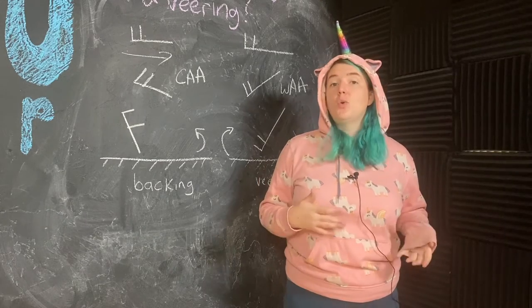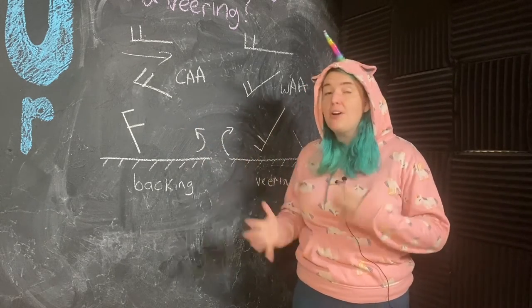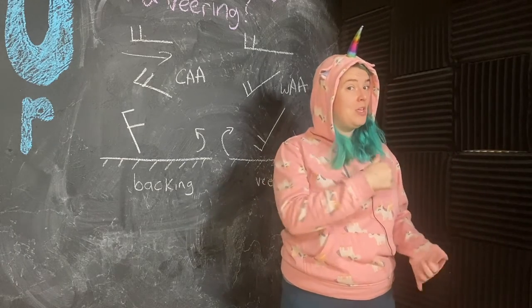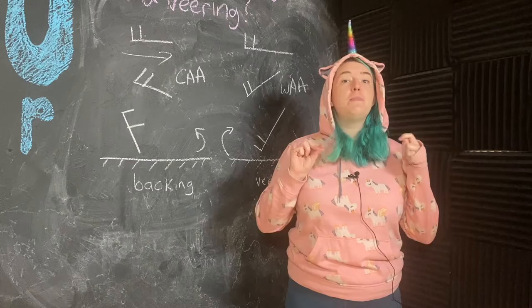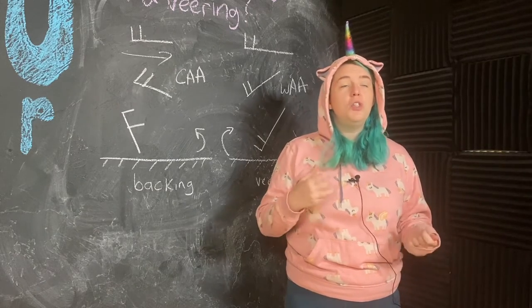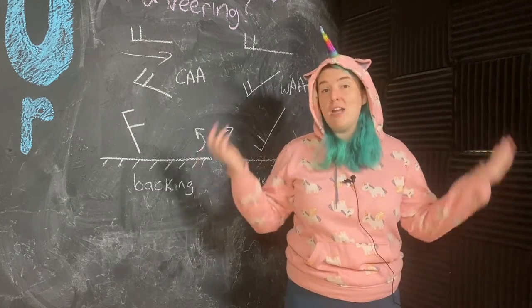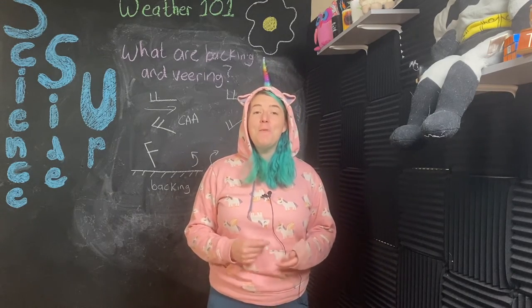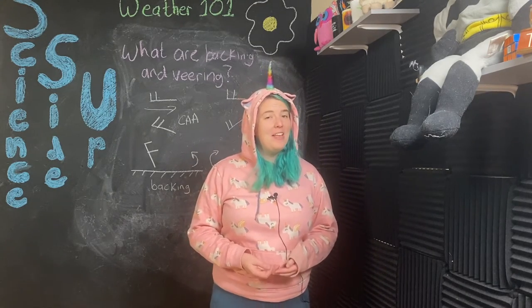In short, being able to identify backing and veering patterns from a vertical wind profile is a great way to do some quick and dirty forecasting, especially in regions when you don't have something like a radar network. Okay team, that's all I've got for you today. I hope you liked this video and I will see you all in the next one.